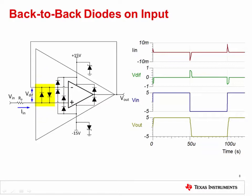However, the back-to-back diodes limit the input to 0.7 volts. Without some type of current limitation, large currents can flow during this time. To prevent this, input resistor RP is used to limit the current during slew limit to less than 10 milliamps. The transient plots on the right show how the resistor limits the input current to less than 10 milliamps, and the back-to-back diodes limit the differential input voltage to less than 1 volt.